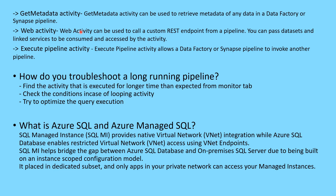Next question: how do you troubleshoot a long-running pipeline? When a deployed pipeline has been running for a very long time, start by finding the activity that is taking the longest — you can identify this from the Monitor tab. Then check the conditions you have given; if it is a looping activity like ForEach or Until, make sure the conditions are correct so they don't run indefinitely. Also, if you have query executions, data flows, or stored procedures inside the pipeline, try to optimize those queries.